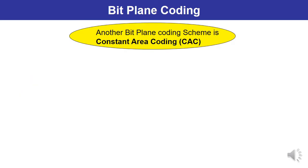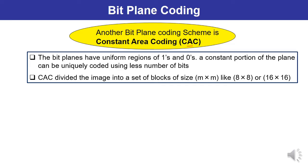There is one more bit plane coding scheme which is known as CAC - Constant Area Coding. Here the bit planes have uniform regions of 1's and 0's, and a constant portion of plane can be uniquely coded using less number of bits. CAC divides the image into a set of blocks of size m×m like 8×8 or 16×16.